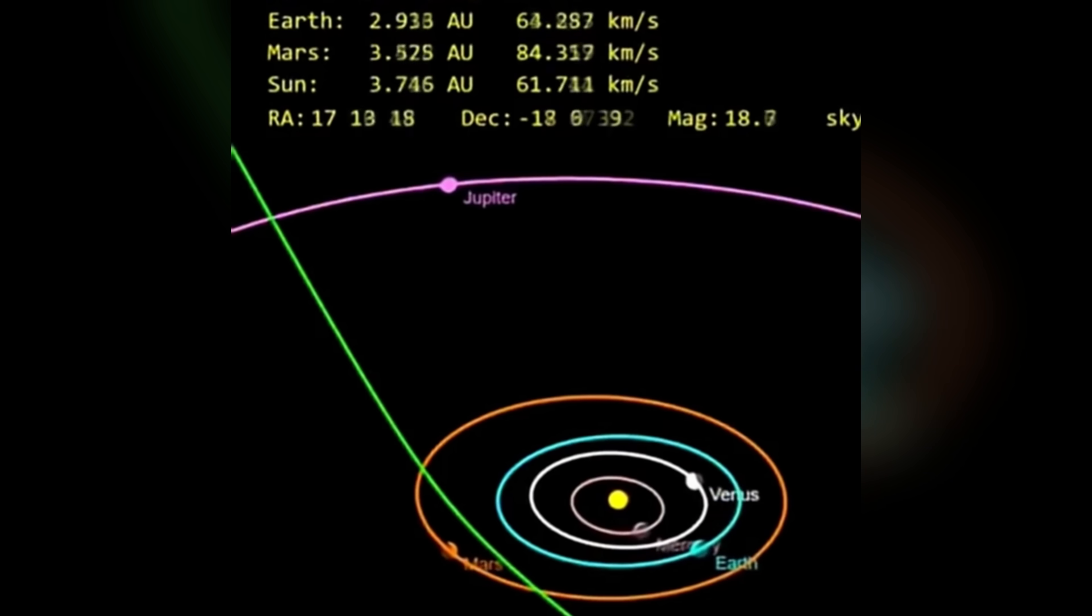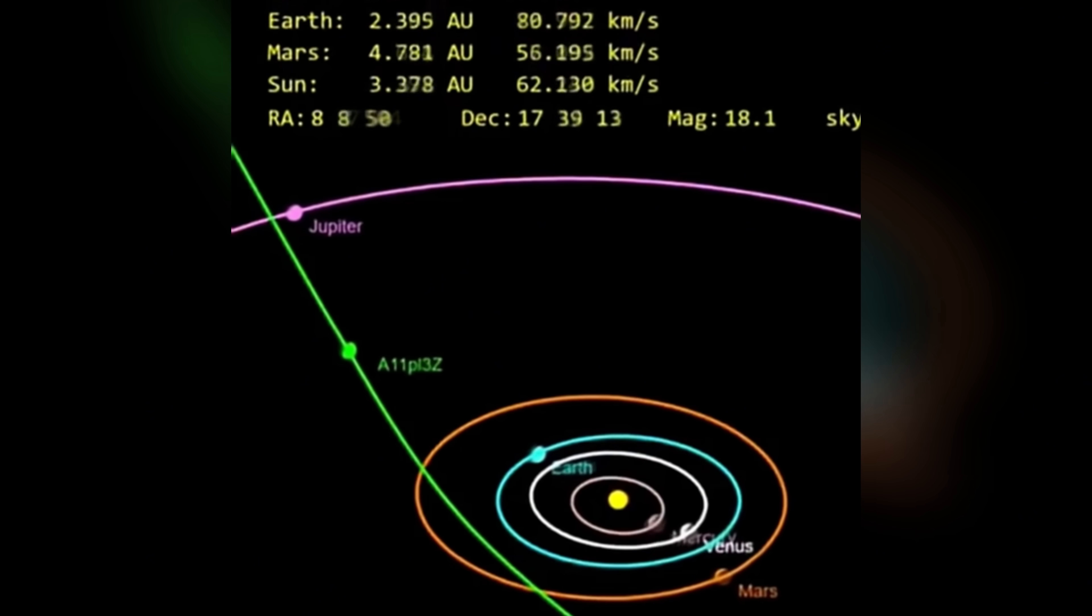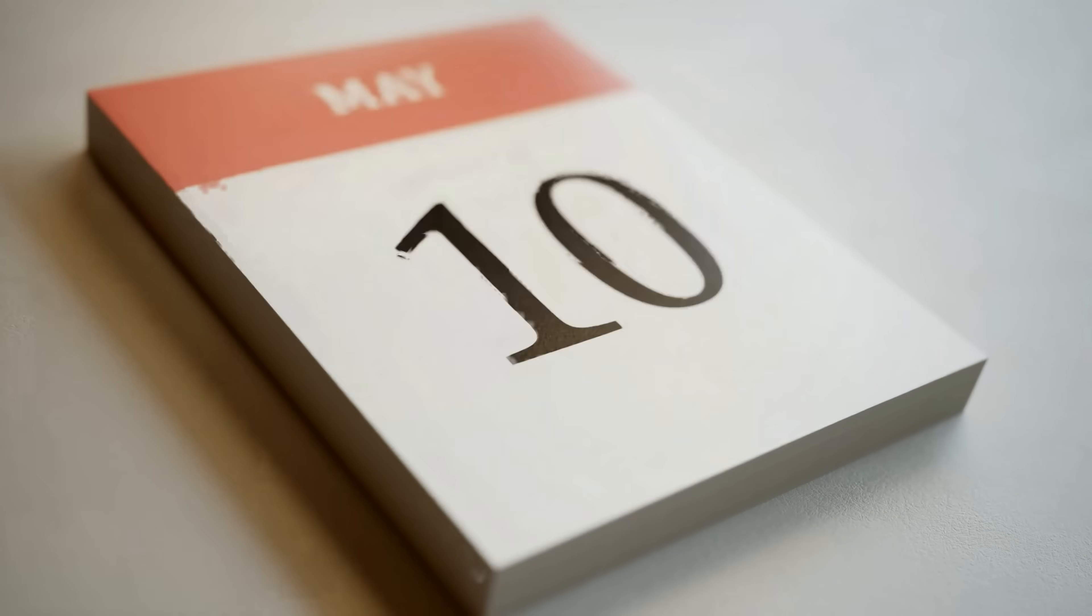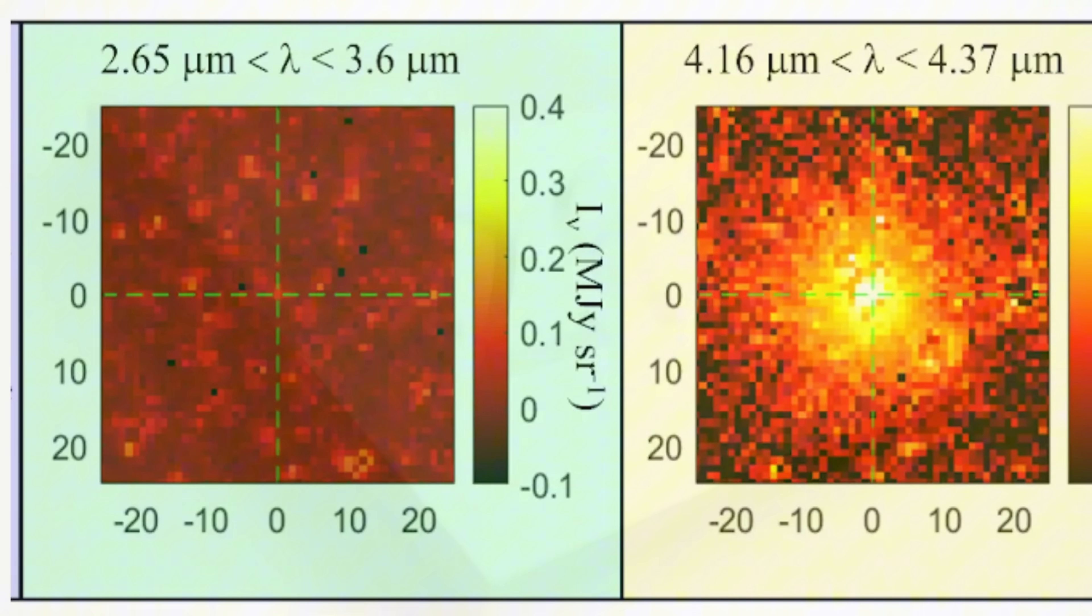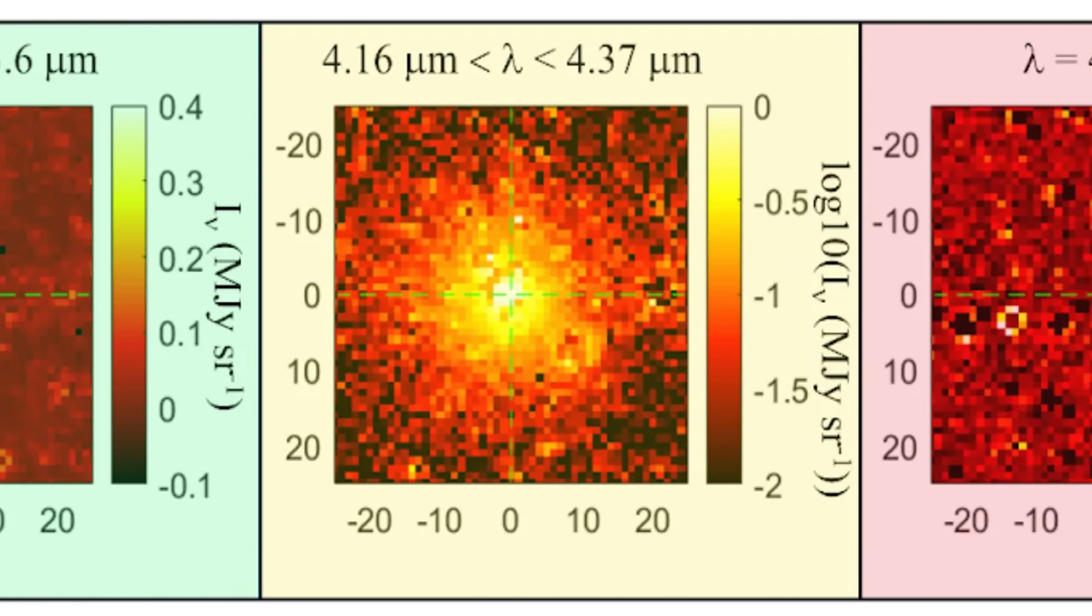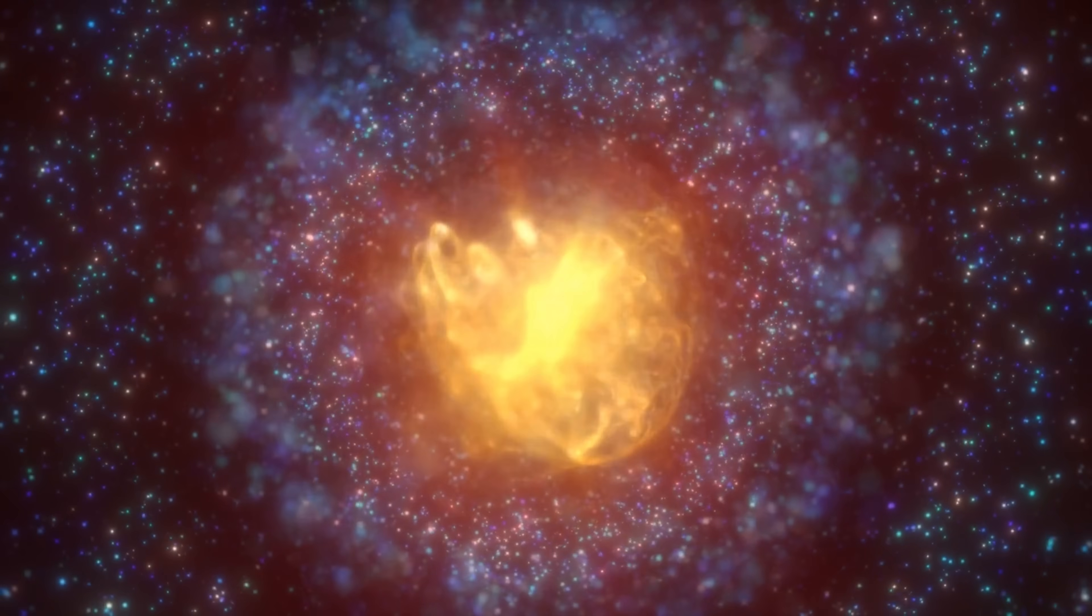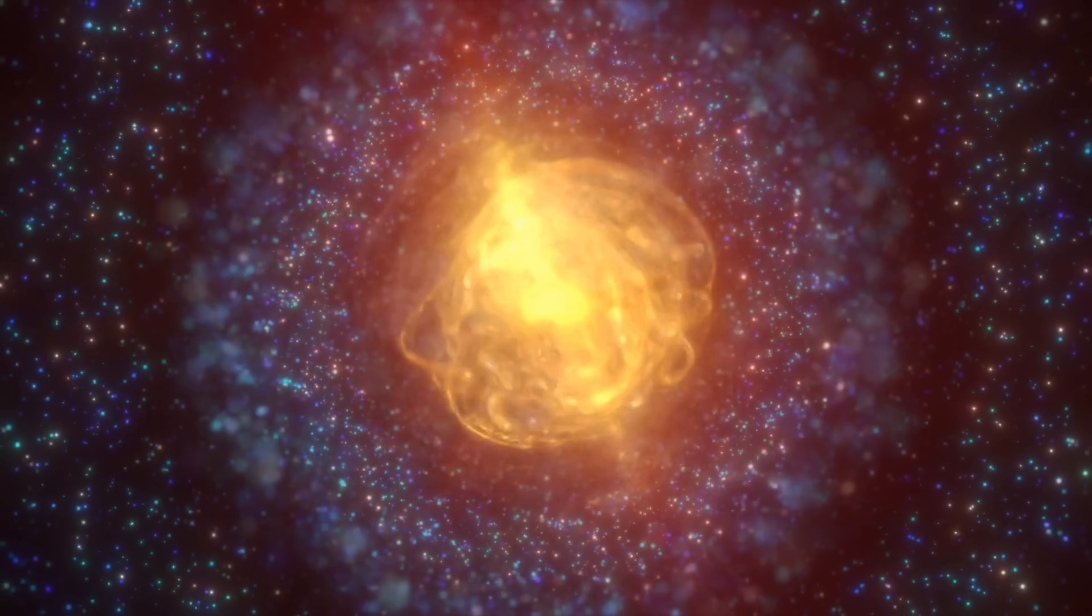The possibility of deceleration first emerged from observations that predated the object's official discovery. Archival data from NASA's Transiting Exoplanet Survey Satellite, or TESS, revealed that between May 7 and June 3, 2025, the object brightened by a factor of five. During that interval, it traveled a distance of 0.9 astronomical units. Under normal solar illumination, such a change in distance could only account for a 1.5-fold increase in brightness, not five.